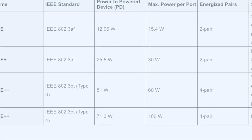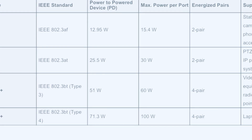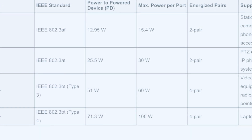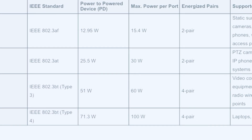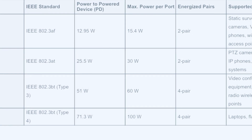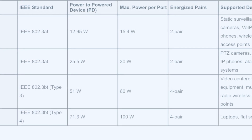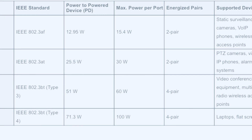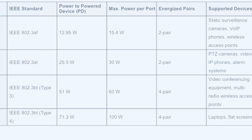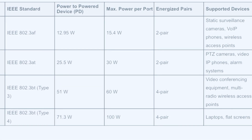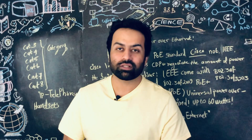PoE Plus Plus Type 4 provides 71.3 watts minimum and up to 100 watts, also using four pairs. A switch providing this level of power will deliver significant current. This high power level supports devices like laptops and flat-screen or touch-screen displays. That covers all the information about PoE types and power levels.